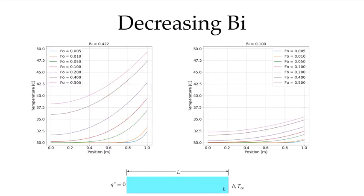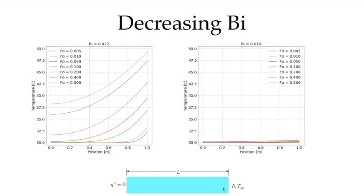What happens as we decrease the Biot number? Starting from Biot = 0.422, I increase the thermal conductivity to get a Biot number of 0.1. Plotting at the same non-dimensional times, the temperature variation across the bar is now only about 5 degrees. As the Biot number gets even smaller, there's essentially no variation, and the lumped capacitance analysis becomes valid. At Biot = 0.01, there is less than one degree of variation across the entire wall section.